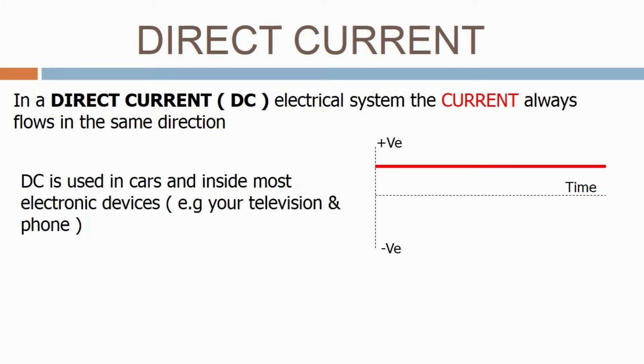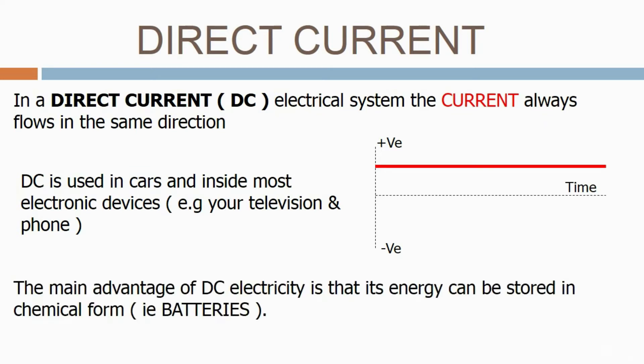DC is used in cars and inside most electronic devices, i.e. your television or phone. The main advantage of DC electricity is that its energy can be stored in chemical form, i.e. batteries.